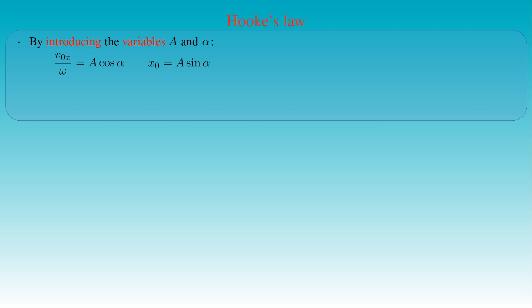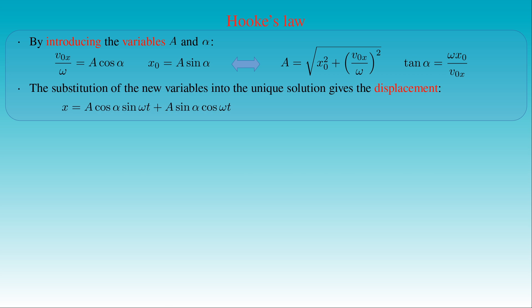This equation can be simplified by introducing new variables A and α such that: v₀ₓ / ω equals A cos α, and x₀ equals A sin α. These new variables can also be written in terms of the initial data. Adding the squares of these equations, we can express A as the square root of (x₀² + (v₀ₓ / ω)²). Dividing the second equation by the first, we can express tan α as the ratio of ωx₀ to v₀ₓ. By substituting the new variables into the unique solution, we can write the displacement x as A cos α · sin(ωt) plus A sin α · cos(ωt).